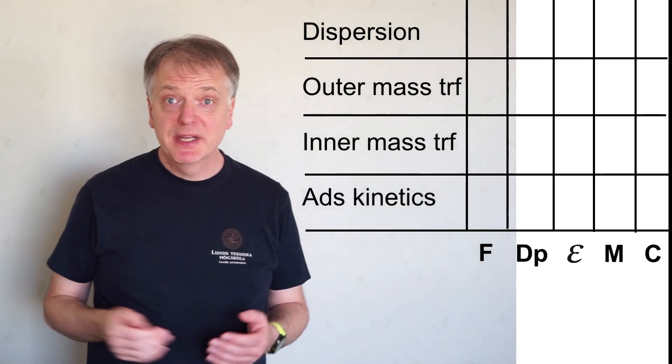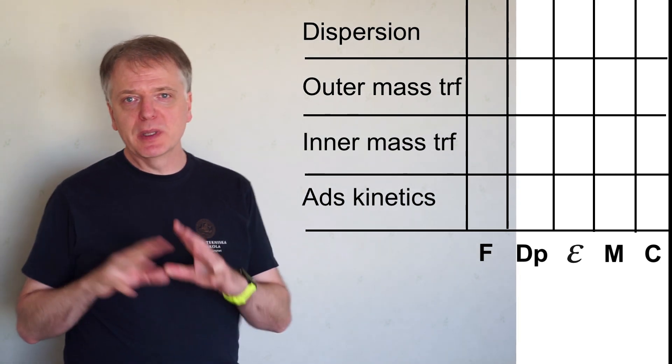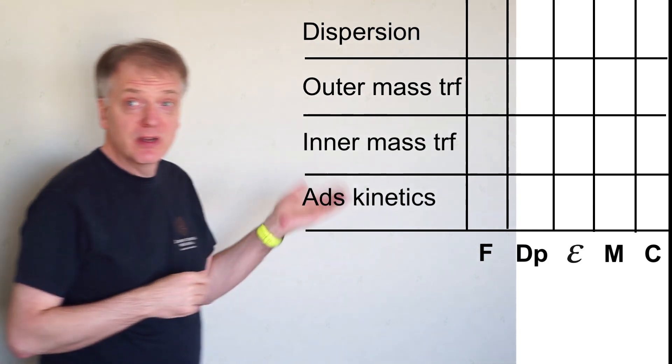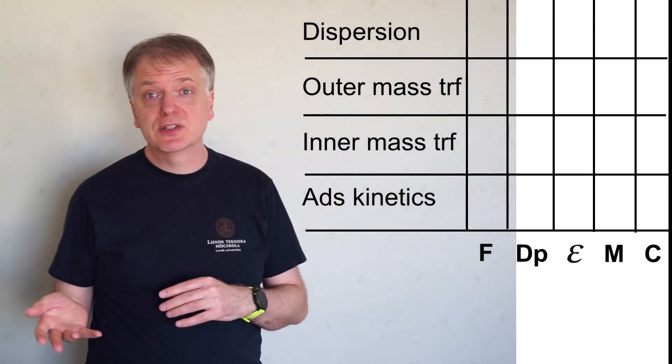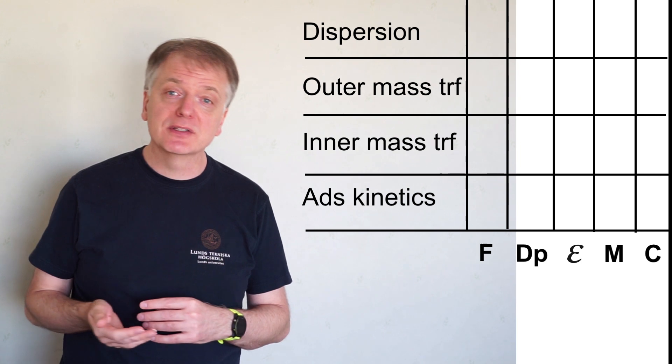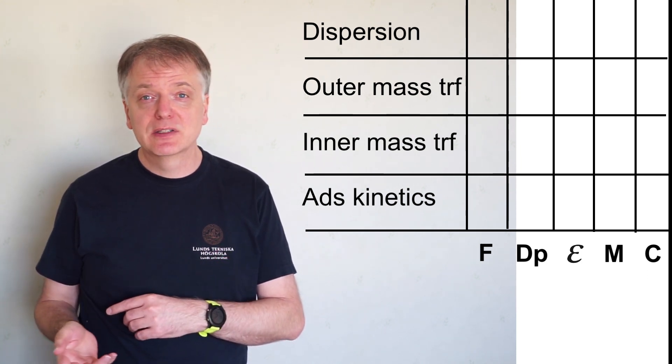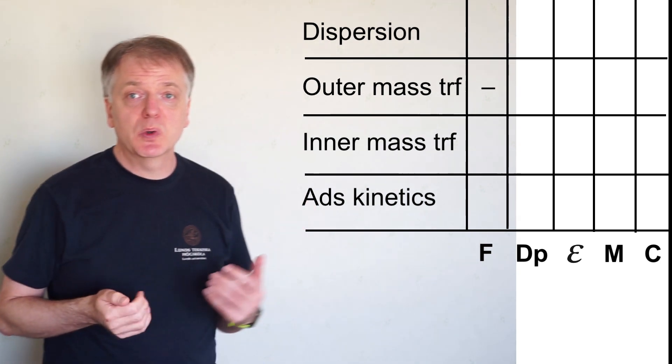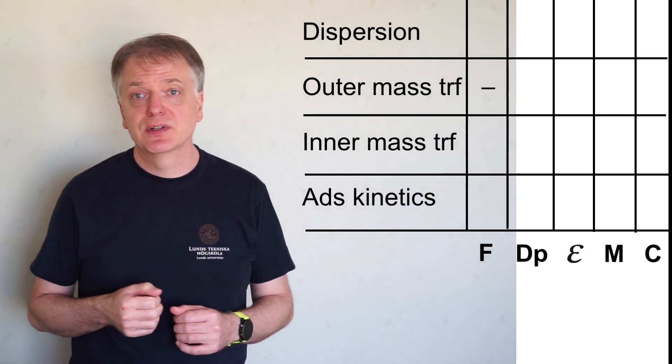So did you manage? This is rather difficult but some of the things might be easier than others. Regarding flow rate, you might remember from lectures and books on fluid dynamics that a higher flow rate leads to thinner boundary layers. Thus an increased flow rate decreases broadening due to outer mass transfer resistance.